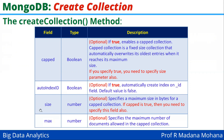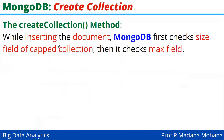The size parameter is used along with the capped field. Its type is number and it is optional, specifying a maximum size in bytes for a capped collection. If capped is true, then we need to specify this field as well. The next field is 'max', also of type number and optional, which specifies the maximum number of documents allowed in the capped collection. If you want to set the number of documents along with size, you can use the max parameter. When inserting a document, MongoDB first checks the size field of the capped collection, then it checks the max field.